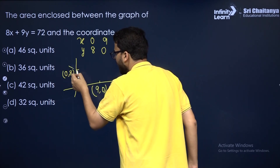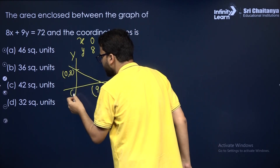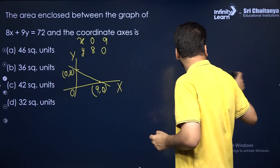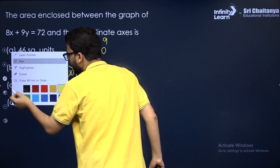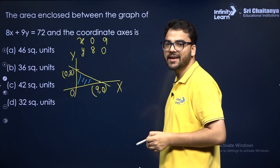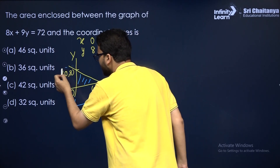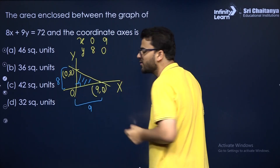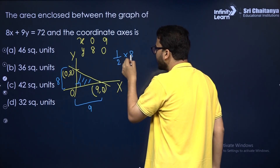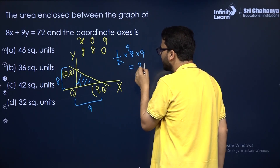If you join these points, you get this graph. This is the x-axis, y-axis, and the origin. You have to find the area enclosed between the graph and the coordinate axis — that is, this triangular area. This is 9 units along the base and 8 units in height, and this is a right-angle triangle. So its area will be half into base into height: half into 8 into 9, which equals 36 square units.